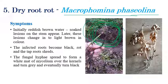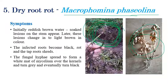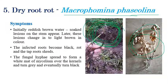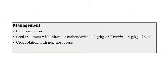The roots shred and cannot bear the weight of the plant head. Due to rotting of the stem, the plant slowly starts to die and wilting symptoms can be observed. If you cut open the stem, black color discoloration and a black color mycelial mat can be observed.